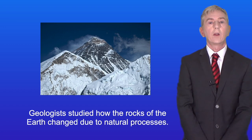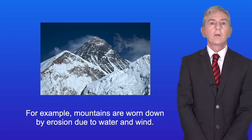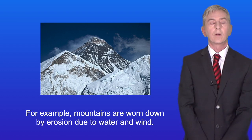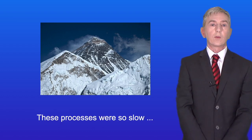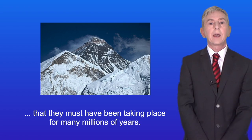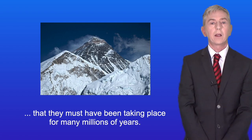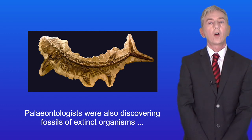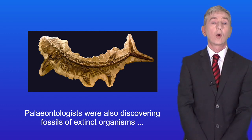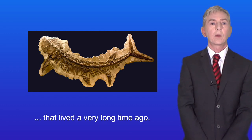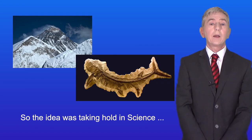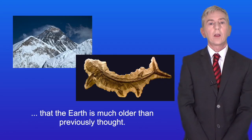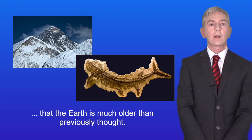Geologists studied how the rocks of the earth changed due to natural processes. For example, mountains are worn down by erosion due to water and wind. These processes were so slow that they must have been taking place for many millions of years. Palaeontologists were also discovering fossils of extinct organisms that lived a very long time ago, so the idea was taking hold in science that the earth is much older than previously thought.